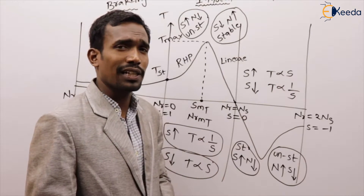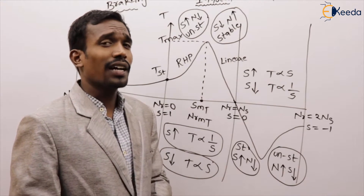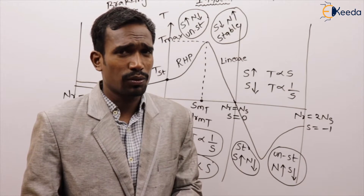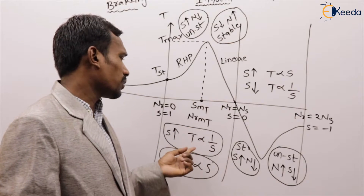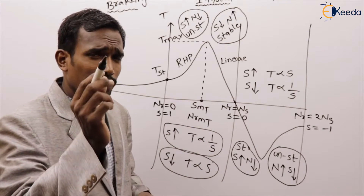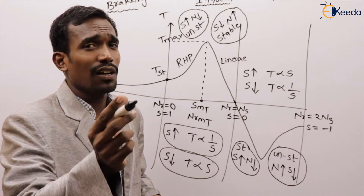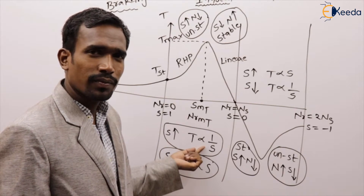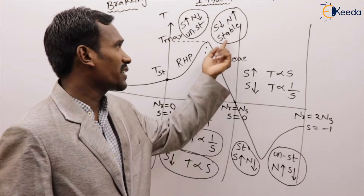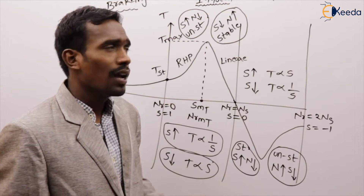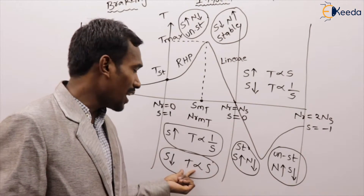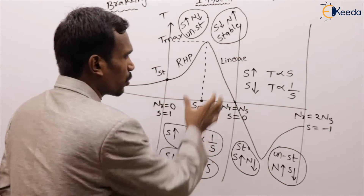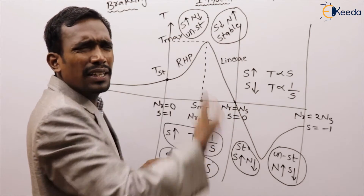Regarding the MCQ on torque proportionality — torque may be directly proportional to slip (option A) or inversely proportional to slip (option B), so the answer is both A and B. However, if the question specifies the starting condition of the induction motor, torque is inversely proportional to slip. At stable or steady-state condition, torque is directly proportional to slip.